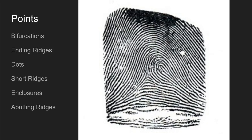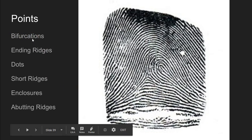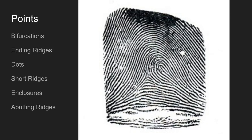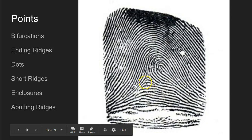When an examiner compares one fingerprint to another to see if they may be a match, they're looking for these points to make sure they're in the same location for each fingerprint. The number of points necessary to make an identification varies — often numbers like seven, eight, or nine are cited — but every agency is slightly different; what's most important is finding enough points to feel comfortable making an identification. For example, a bifurcation is a ridge that travels along and then splits into two, like a fork in the road. We can see lots of bifurcations in this fingerprint. An ending ridge is a ridge that travels along and then simply stops.